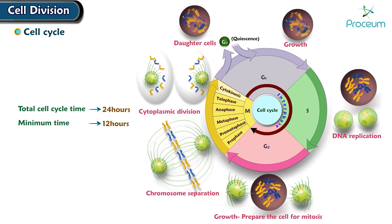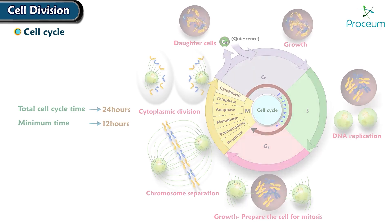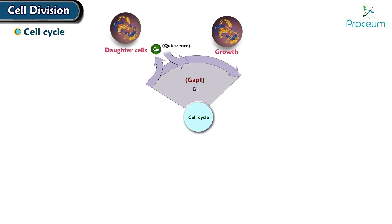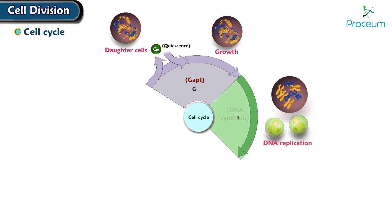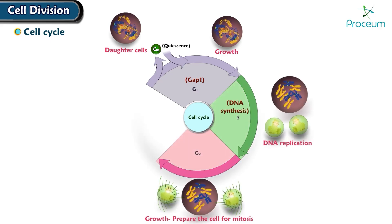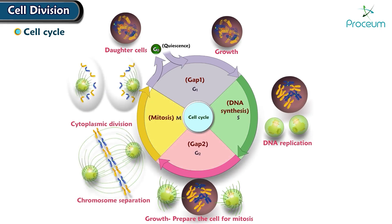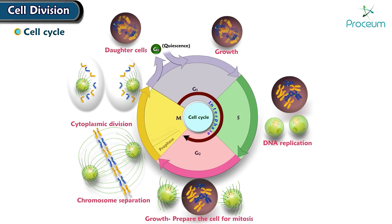The cell cycle can be divided into four phases: G1 (gap 1 phase), S (DNA synthesis phase), G2 (gap 2 phase), and M (mitosis phase). The cell cycle involves two broader phases: interphase and mitosis.